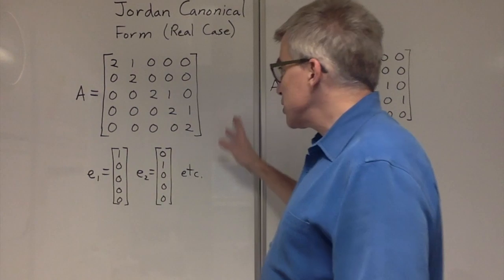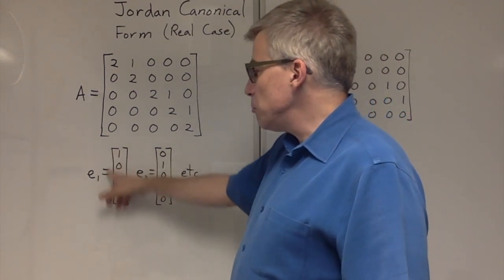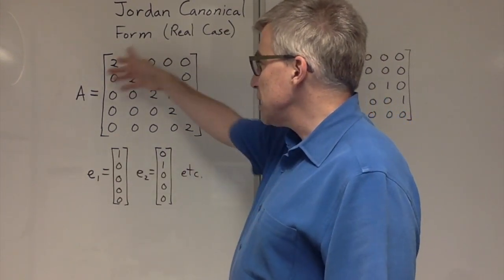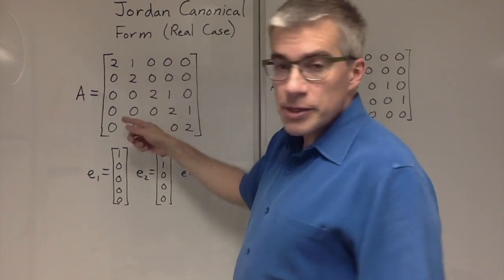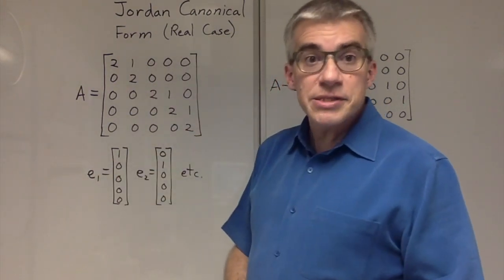Well, we can kind of tell by inspection here that E1, if you multiply A by E1, you will get 2E1, so that E1 is an eigenvector.